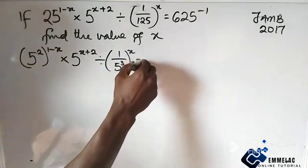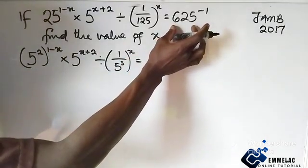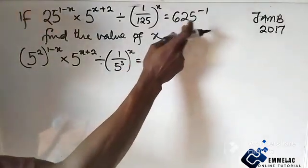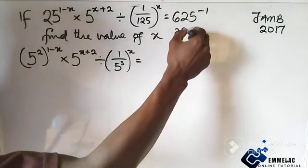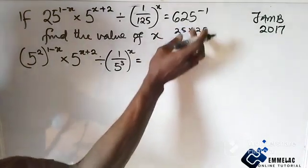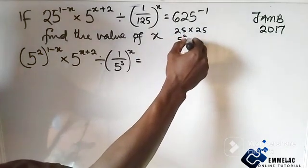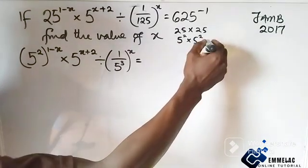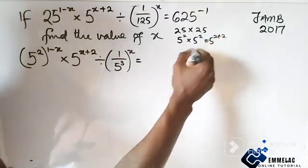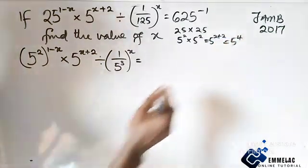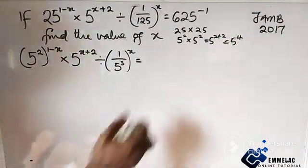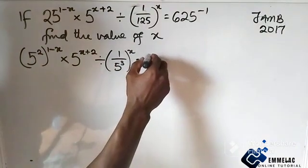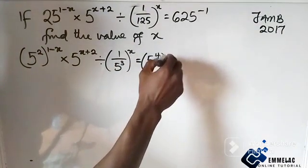Now resolving the right-hand side to the base of 5: we have 25 times 25. This gives us 5 raised to power 2 times 5 raised to power 2. By the law of indices, this gives us 5 raised to power 2 plus 2, which equals 5 raised to power 4.